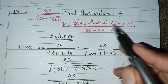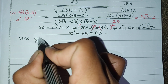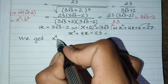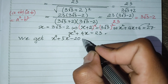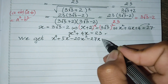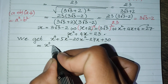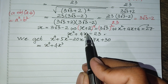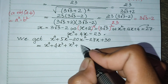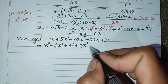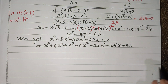Now I use this key relation to evaluate the expression. For the numerator h to the power 4 plus 5h cubed minus 20h squared minus 27h plus 30, I regroup the terms strategically. I rewrite it as h to the power 4 plus 4h cubed, plus h cubed plus 4h squared, then minus 24h squared minus 27h plus 30, grouping to take advantage of the relation h squared plus 4h equals 23.